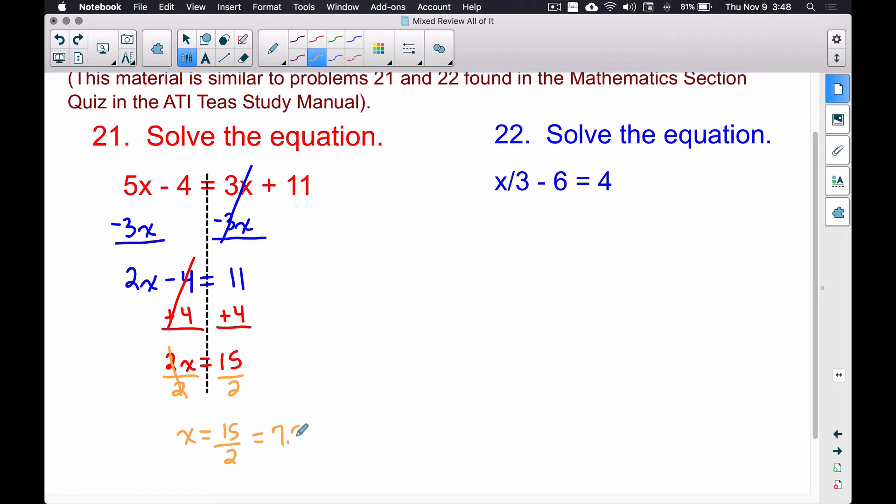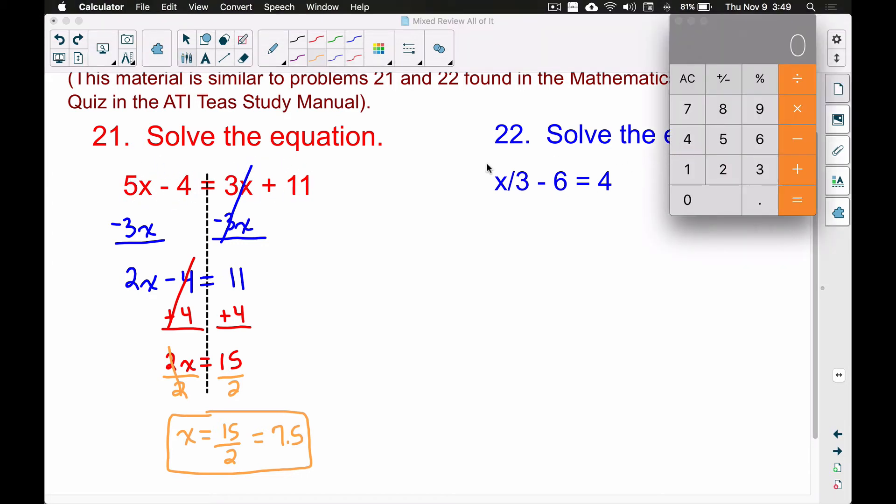So that is our solution to the equation. Now let's check our work by taking 7.5 and plugging it into this x and this x to see if we get the same answer on both sides. On the calculator, I'm going to take 5 times this number 7.5: 5 times 7.5 equals 37.5. Now let's subtract 4 from it. Subtracting 4, we get 33.5. So when we plug in 7.5 here and work all this out, we get 33.5.